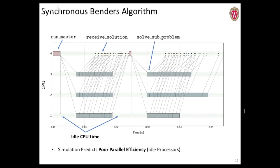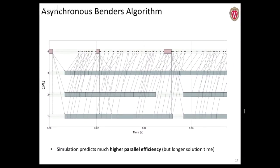If we just change the computing graph and those tasks a little bit, we can get the asynchronous variant of the algorithm and simulate that very easily. In this case it looks like it actually took a little bit longer to complete because it had to run more iterations — because the asynchronous variant has the master waiting for only a certain fraction of the subproblems to complete before running the master again. But you get better parallel efficiency: these nodes are not spending much time idle. While it took longer in the simulation, you might expect it to scale better on a larger system, which is something you could test using this paradigm.